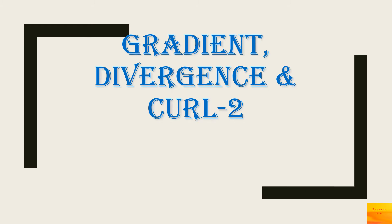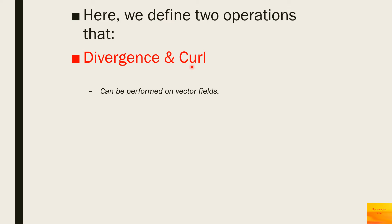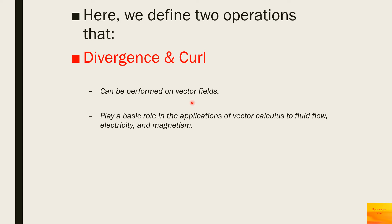Welcome to my channel Phi Concepts CHM. This is the second part of the series on gradient, divergence, and curl. In the earlier video we covered gradient; here we define two operations — divergence and curl — which can be performed on vector fields and play a basic role in the applications of vector calculus.